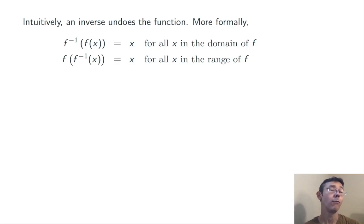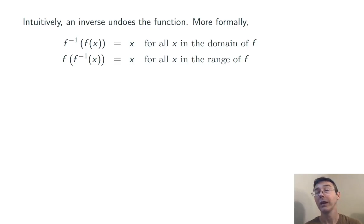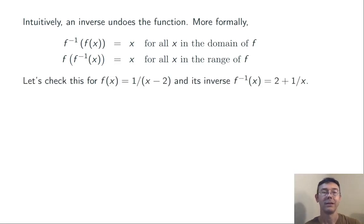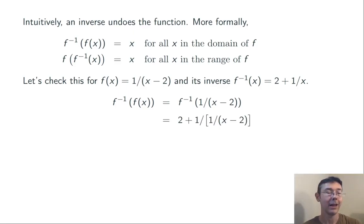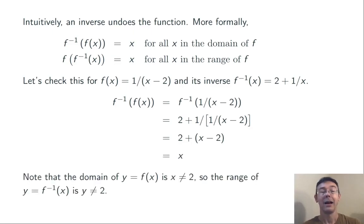Perhaps your main intuition for inverse functions should be this: inverse functions undo the original function. More formally, f inverse of f of x equals x for all x in the domain of f, and f of f inverse of x equals x for all x in the range of f — which is the domain of f inverse. For example, here's a function 1 over x minus 2, and its inverse 2 plus 1 over x. We can verify this by computing f inverse of f of x: plugging 1 over x minus 2 into f inverse gives 2 plus 1 over (1 over x minus 2), which simplifies to 2 plus x minus 2, which is x. Notice that the domain of y equals f of x is all real numbers except 2, so the range of f inverse is also all real numbers except 2.